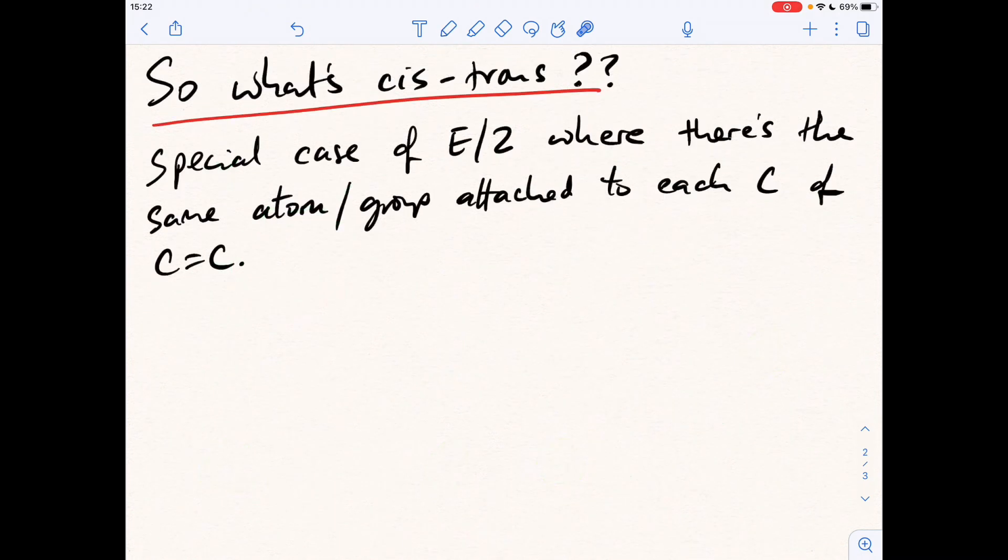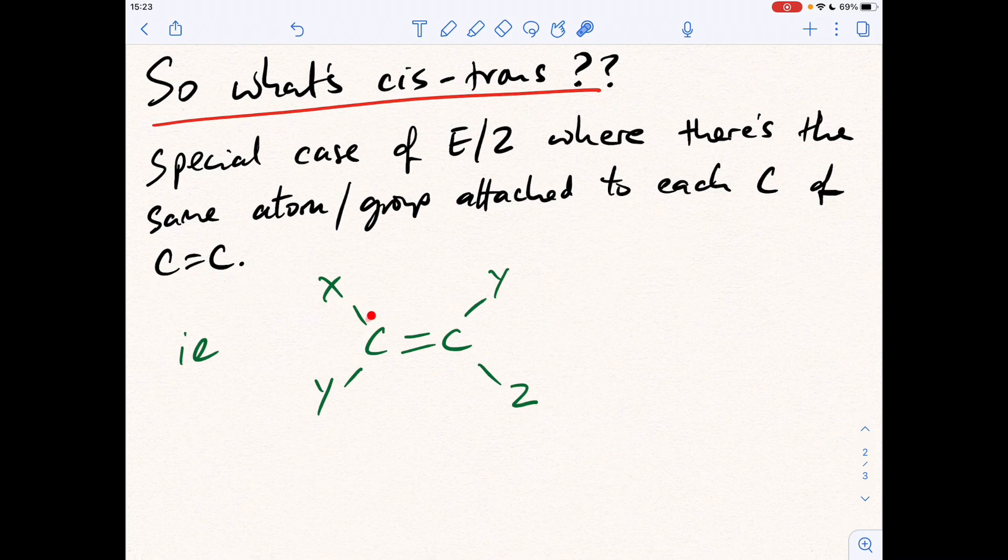So if we move on to, well, what's the difference between that and cis-trans? Well, cis-trans is a special case of E/Z isomerism, where you've got the same atom or group of atoms attached to each carbon of the C=C double bond. So essentially, we're looking at a molecule that resembles something like this.